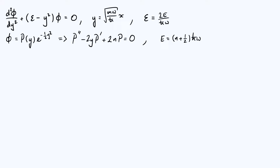We started by rescaling our position and energy variables x and e to become y and epsilon, as defined at the top of the screen here, and those rescaled variables led to the rescaled Schrödinger equation — the differential equation at the top left — and we're trying to solve for the wave function phi as a function of y.